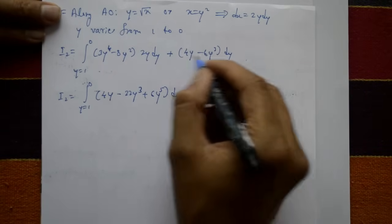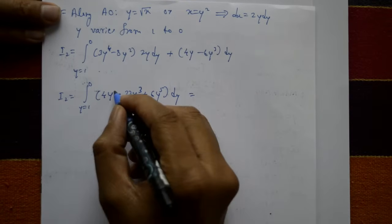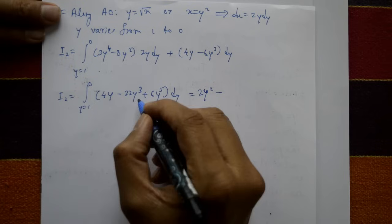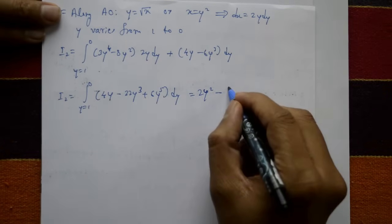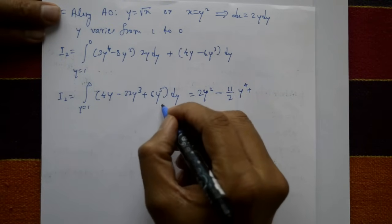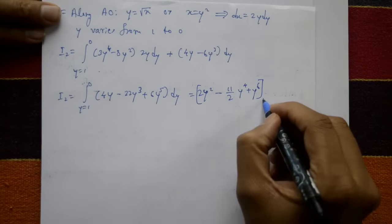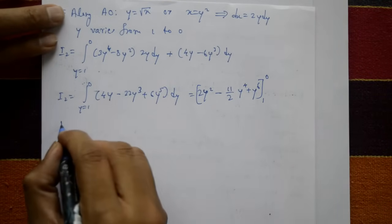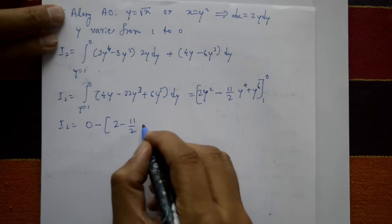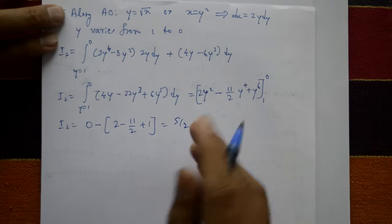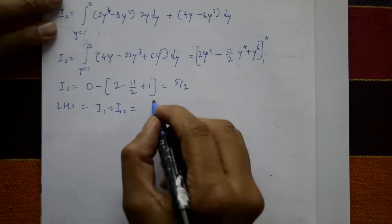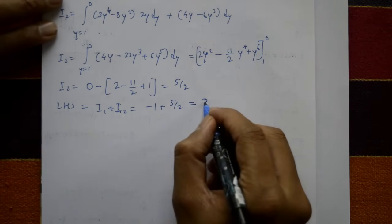Integrating term by term: 2y² − (11/2)y⁴ + y⁶, evaluated from 1 to 0. Upper limit (y = 0) gives 0. Lower limit (y = 1) gives 2 − 11/2 + 1 = 5/2. So I2 = 0 − (−5/2) = 5/2. Therefore LHS = I1 + I2 = −1 + 5/2 = 3/2.